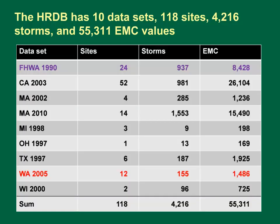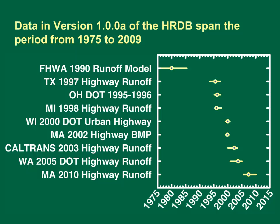Currently, version 1.0.0a has 10 datasets, 118 sites, 4,216 storms, and 55,311 EMC values. It contains the Federal Highway Dataset and nine other datasets. However, it should be noted that the Washington State DOT has issued a data retraction letter for some of their data to the International BMP Database team. If you have datasets, please let me know so I can compile them for the next update.